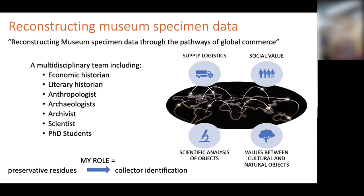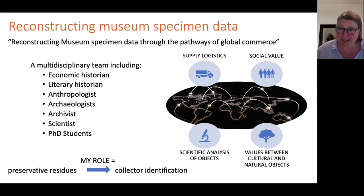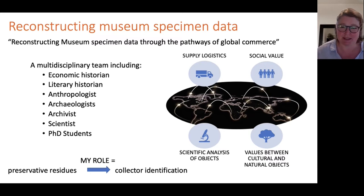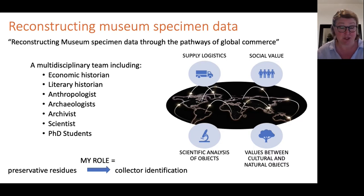This is the very issue that led to the ARC-Link project I'm a part of. The project aims to match 18th and 19th century field collectors with trade records and expedition notes to determine contextual data like date and location. It's a large multidisciplinary team, and my role is to investigate the possibility of using the evidence within the specimen itself — the preservatives — to identify the field collector.